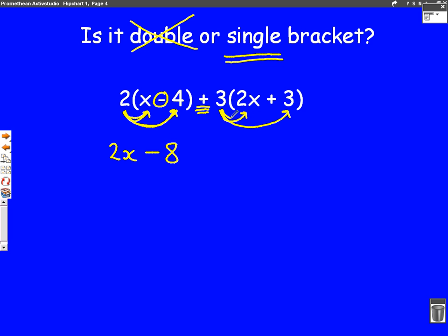And then the second bracket. 3 times 2 is 6x. 3 times 3 is 9. There's a plus in the middle. So we put a plus in the middle. And these two are added together. That will be one mark.